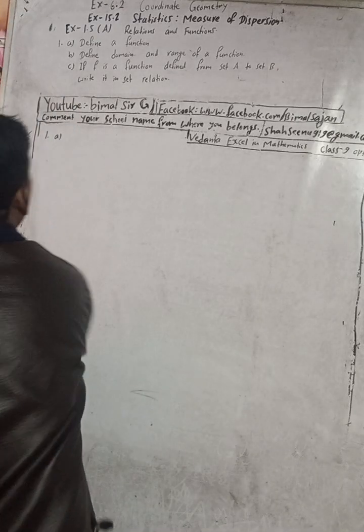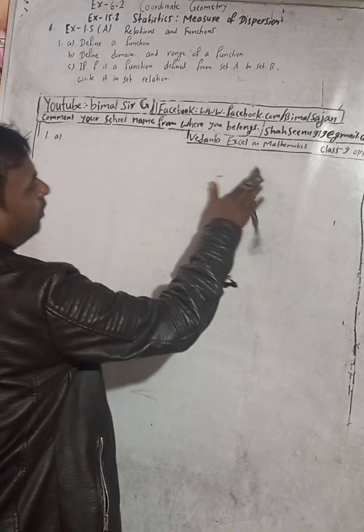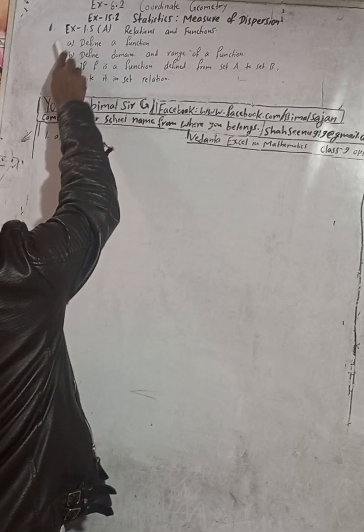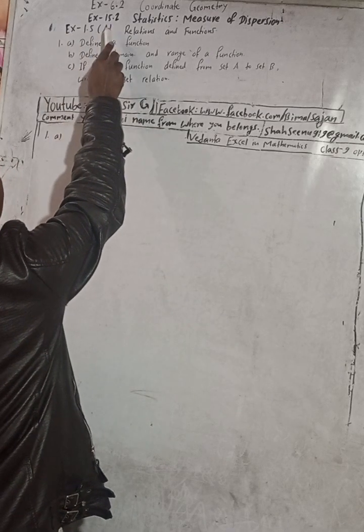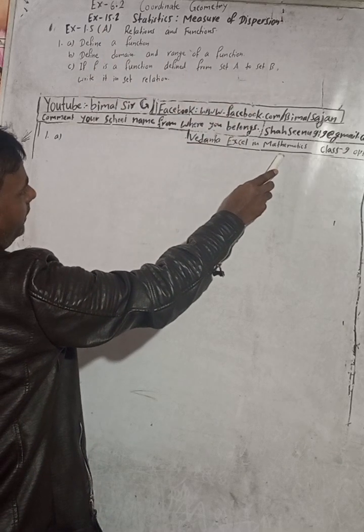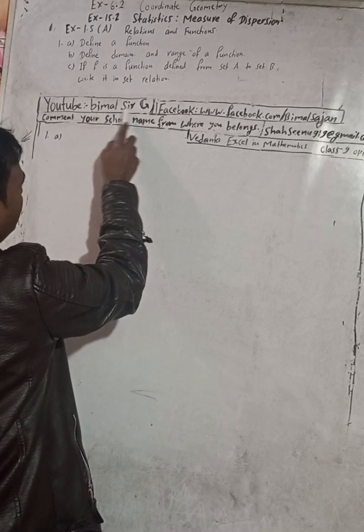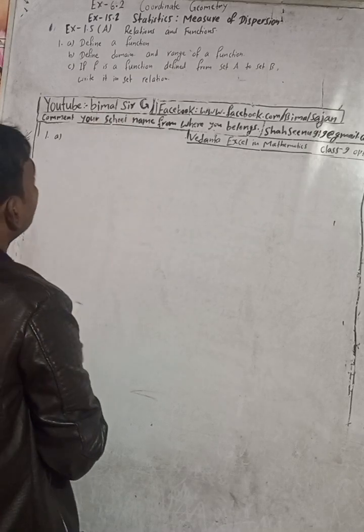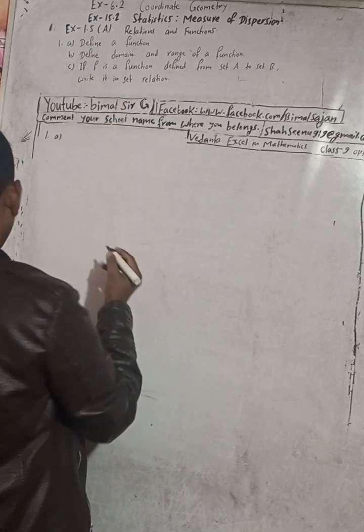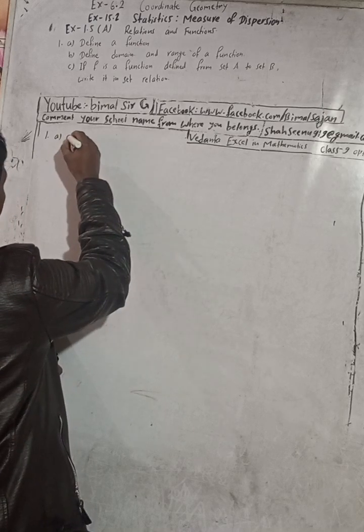Hi Class 9 and 10 students, welcome back to Vimal Surge YouTube channel. In this chilly cold season, I am here to warm up your days and nights with simple content. Let's dive into mathematical solutions for Class 9 and 10. This is Question 1, Exercise 1.5 on Relations and Functions from Vedant XLE Optional Mathematics Class 9. Don't forget to check the Vimal Surge playlist. Now, Question 1a: define a function. Here is the solution for 1a.